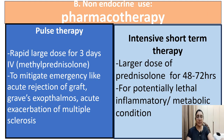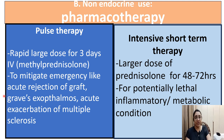There are various modes of administration of glucocorticoids. First is pulse therapy, where short-acting or intermediately acting glucocorticoids are introduced in large doses for three days intravenously — like methylprednisolone — to mitigate emergencies like acute rejection of a graft, Graves' exophthalmos, and acute exacerbation of multiple sclerosis. Second is intensive short-term therapy with large doses of prednisolone for 42 to 72 hours for potentially lethal inflammatory or metabolic conditions.